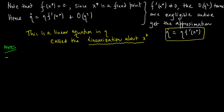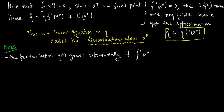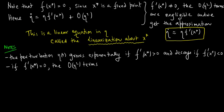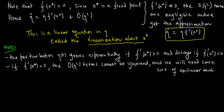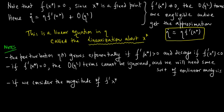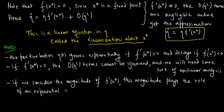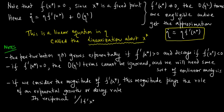Here are some notes. The perturbation η(t) grows exponentially if f′(x*) > 0 and decays if f′(x*) < 0. If f′(x*) = 0, the order η² terms cannot be ignored and we need non-linear analysis. The magnitude |f′(x*)| plays the role of an exponential growth or decay rate, and its reciprocal 1/|f′(x*)| is a characteristic time scale.